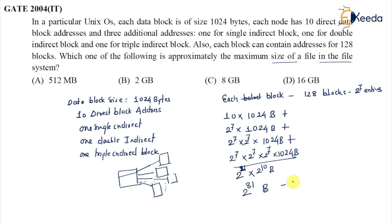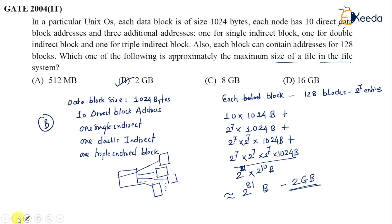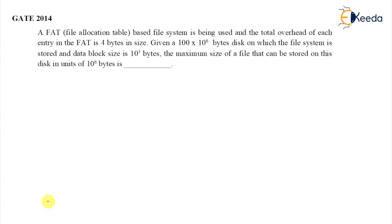That becomes 2 gigabytes, so the answer in this case is option B. Generally this is an approximate answer dominated by the triple indirect term. That is the correct answer.